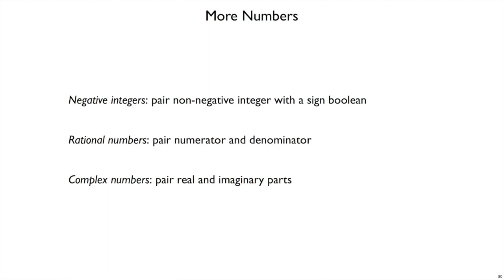Now that we've done all of the non-negative integers, what about negative integers? Well, one possible encoding is to pair a non-negative integer with a boolean that says whether that is negative or not.